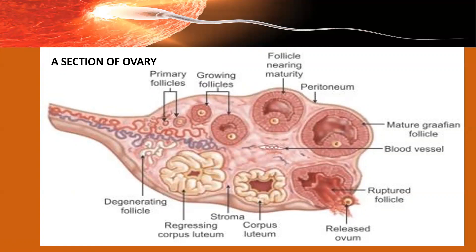Only one follicle in either of the ovaries will get matured into a Graafian follicle at a time — it is not that many follicles are simultaneously maturing. There is a very big difference between gamete formation in males and females. In males, millions of sperms are formed daily, but in females, in one ovarian cycle — which has a duration of one lunar cycle, that is 28 days — only one follicle matures into a Graafian follicle, and that too in only one of the ovaries.